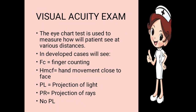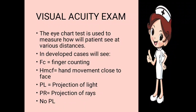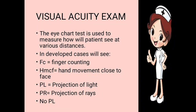If the patient is not able to see even a single letter, we use finger counting (FC) — asking how many fingers are seen at one meter, two meters, three meters, and four meters. If not able to see fingers at one meter, we bring fingers close to the patient's face (FC close to face). Next is hand movement close to face (HMCF) — we move our hand in front of the patient's eyes and ask if they can see it.